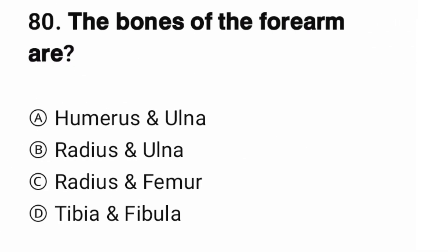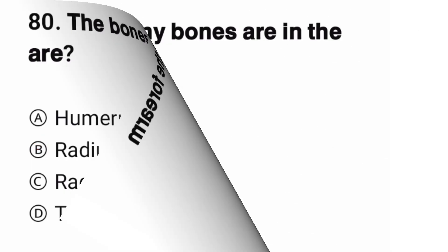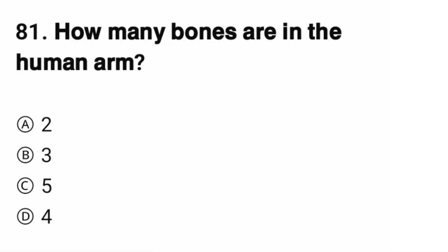Question number 80. The bones of the forearm. The correct option is C, radius and ulna.